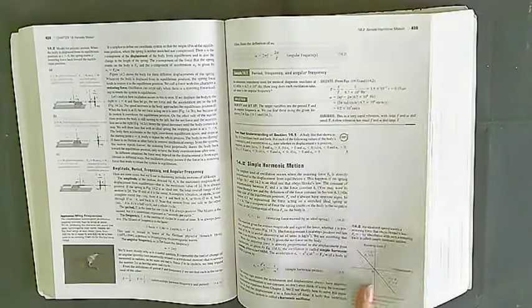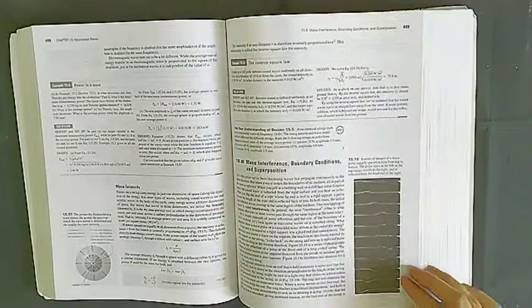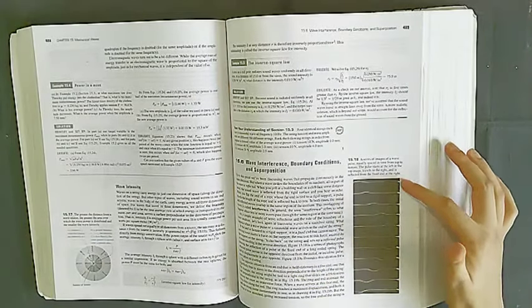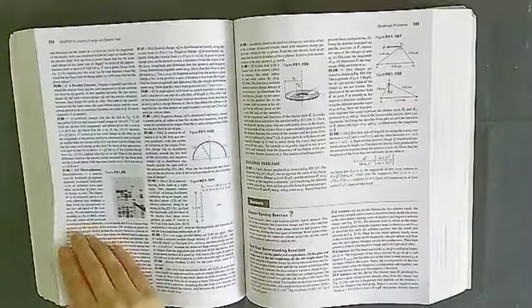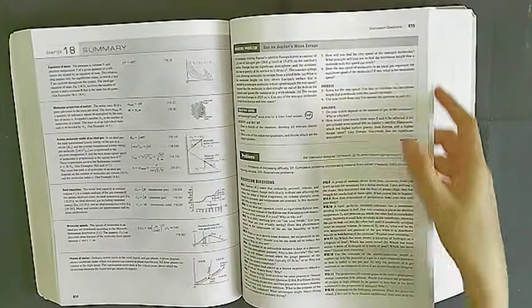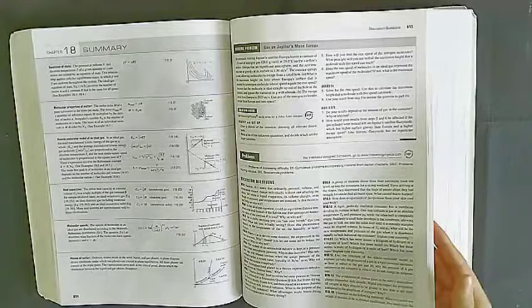This is waves and interference, boundary conditions and superposition, which they have explained in a series of examples. The diagrams that they have provided are helpful in developing your intuition or feel for the concept. This again is end of chapter summary and a bridging problem. This is where they have discussed gas on Jupiter's moon Europa.